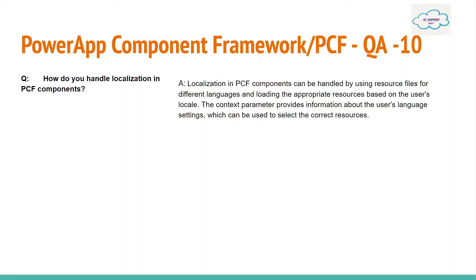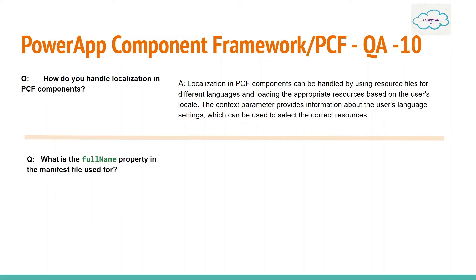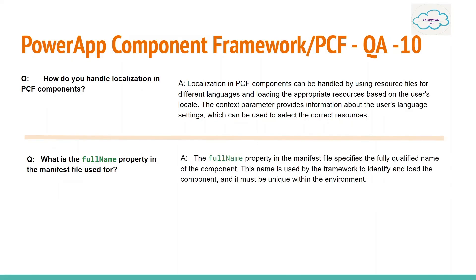Localization in PCF components can be handled using resource files for different languages and loading appropriate resources based on the user's locale. The context parameter provides information about the user's language settings, which can be used to select the correct resources. Question: What is the fullName property in the manifest file used for?